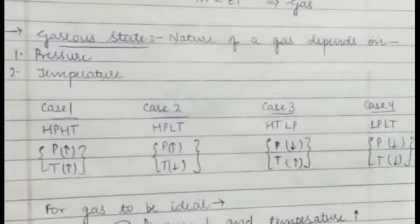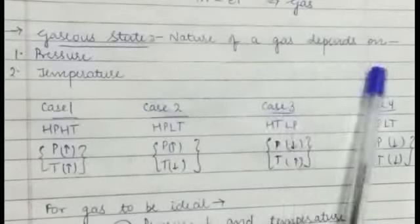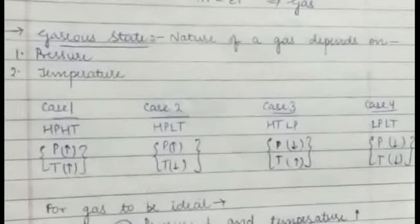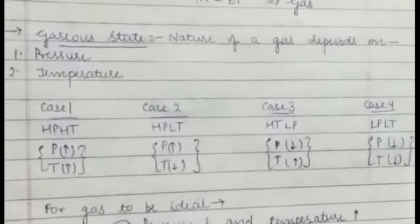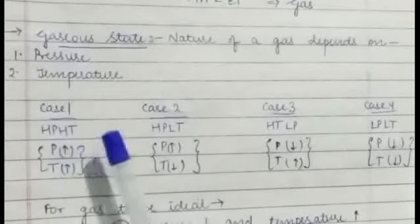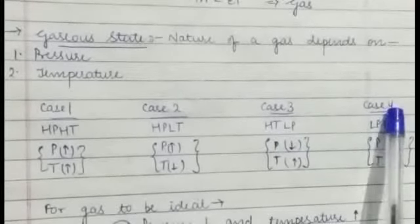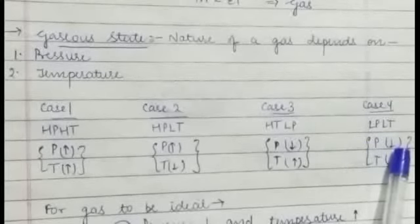Toh is chapter mein hama parhenge basically gaseous state. Gaseous state mein nature of a gas depends upon two parameters: that is pressure and temperature. Ab yahan par bhi hamaari paas char cases ban jate hai: case number one jaha par hamaari high pressure high temperature hoga, case number two high pressure low temperature, case number three high temperature low pressure, case number four is low pressure and low temperature.